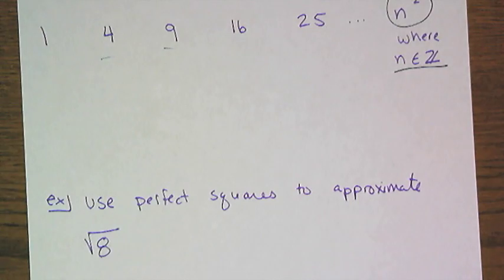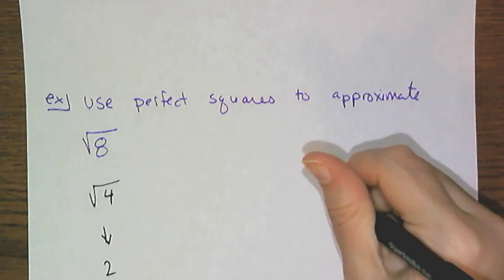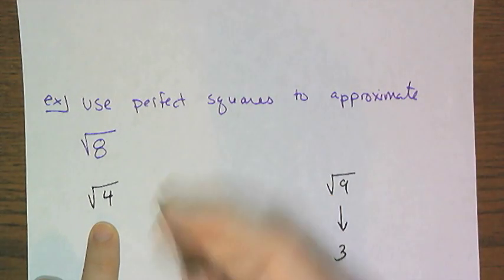So if I want to approximate the square root of 8, and I don't have a calculator I can just type this stuff into, then I can use these perfect squares. The square root of 4, we know, is 2. And the square root of 9, we know, is 3.